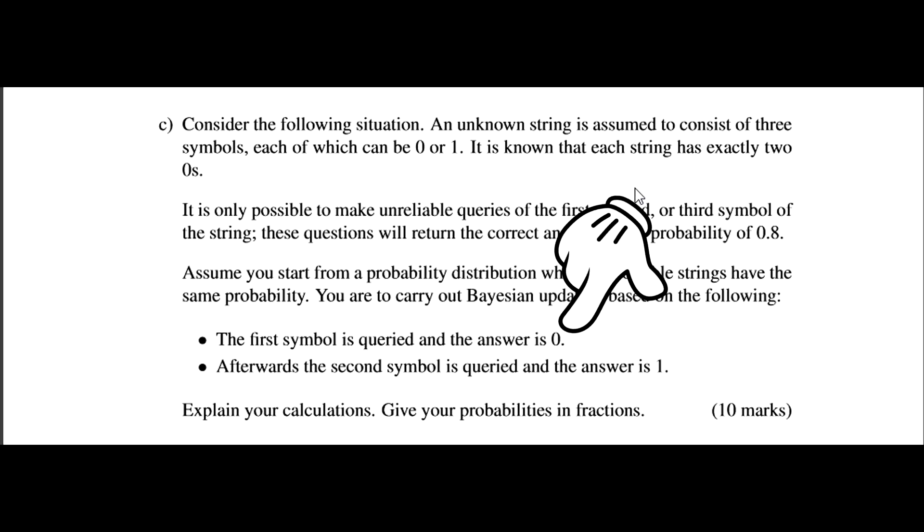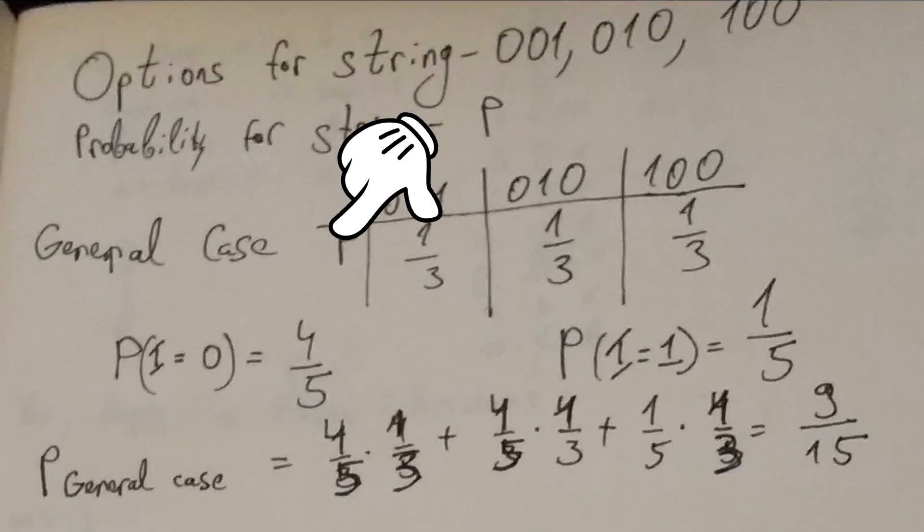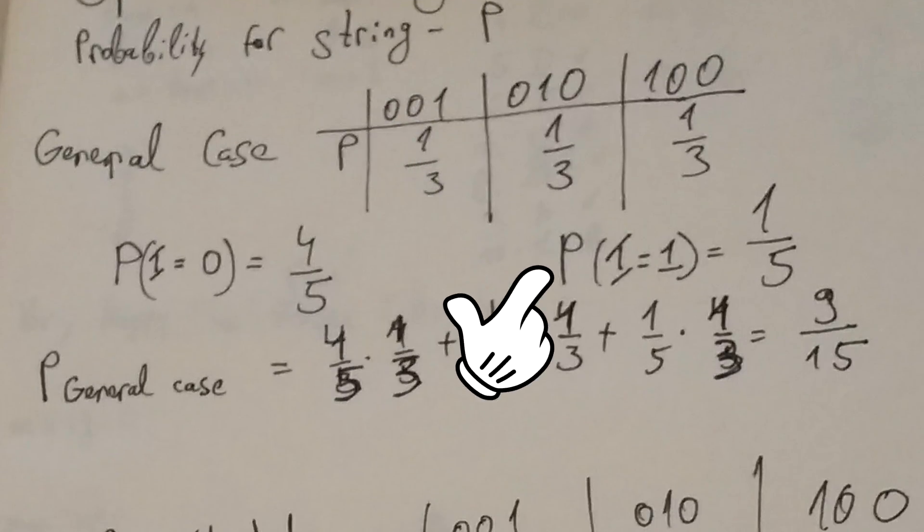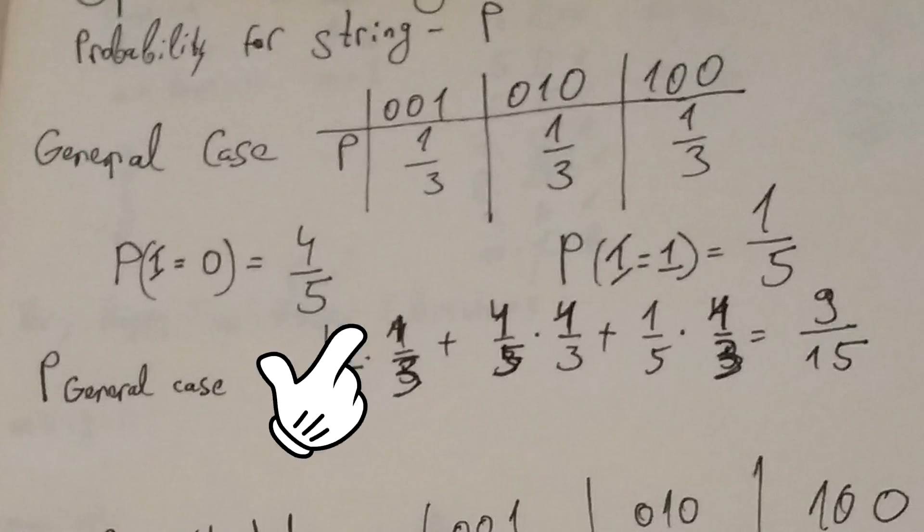Now, we're told that the first symbol is queried and said to be zero. However, the answer has an 80% chance of being correct. So the probability of the first symbol being a zero is four fifths, and the probability of it being one is one fifth. What we need to do is calculate the probability of getting that zero, or in other words, what were the odds that we got that zero given what we know about the P table. We multiply the first and second sections times four fifths, and the last section times one fifth, because the last section's first digit is one. We get nine fifteenths.